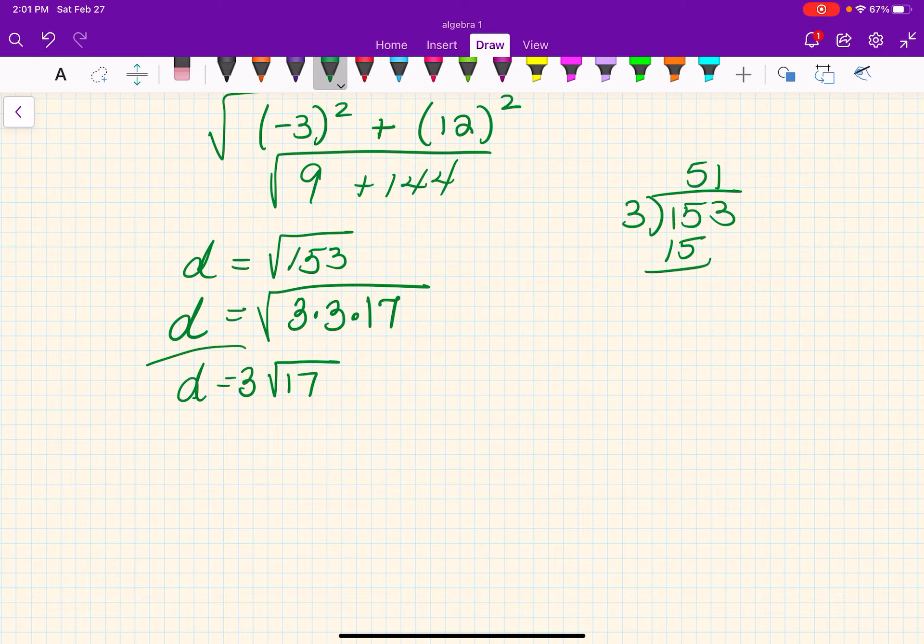Which means 3 can come out and 17 is left behind. I'm expecting you to do the simplified answer. You will get full credit for that, but you will lose a half a point for the square root of 153 for not simplifying it all the way.